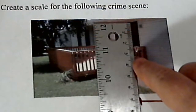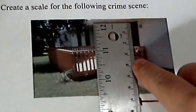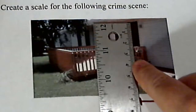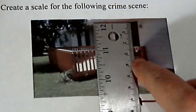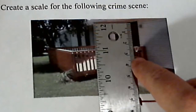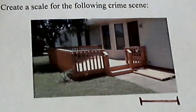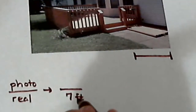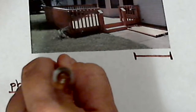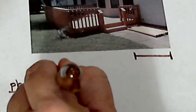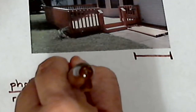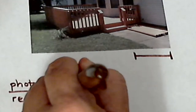It comes down to about right here — it's kind of hard to see — but it comes down just past 3, about 3.2 centimeters. So what that tells us is on the photo, 7 feet is equivalent to 3.2 centimeters.